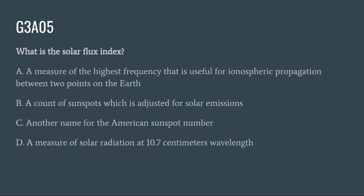G3A05: What is the solar flux index? A. A measure of the highest frequency that is useful for ionospheric propagation between two points on the earth. B. A count of sunspots which is adjusted for solar emissions. C. Another name for the American sunspot number. Or D. A measure of solar radiation at 10.7 centimeters wavelength. The correct answer is D: a measure of solar radiation at 10.7 centimeters wavelength.